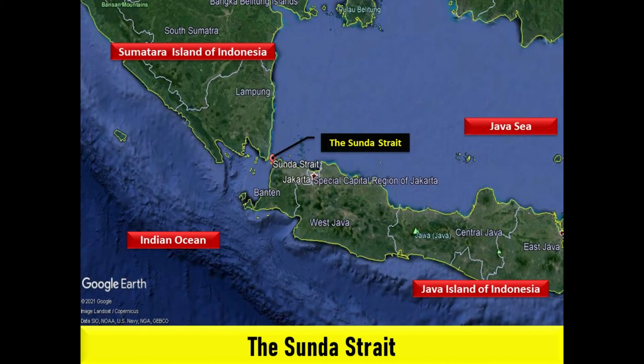The Sunda Strait is the strait between the Indonesian islands of Java and Sumatra. It connects the Java Sea to the Indian Ocean. The name came from the Sunda Kingdom, a kingdom ruling the west part of Java. It also comes from the name of the Sundanese people, the native people of West Java.